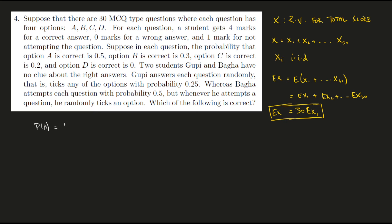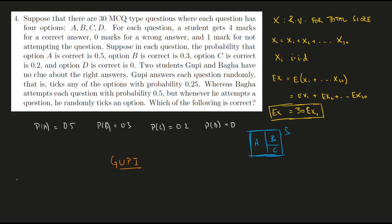We are given the probabilities of each answer being correct. Let me write that down: probability of A being correct is 0.5, probability of B is 0.3, probability of C is 0.2, and probability of D is 0. Notice how these probabilities sum to 1 — that is the entire sample space divided into four options, where D has probability 0, so D won't come up as the correct answer.